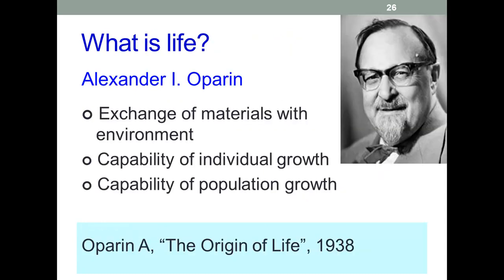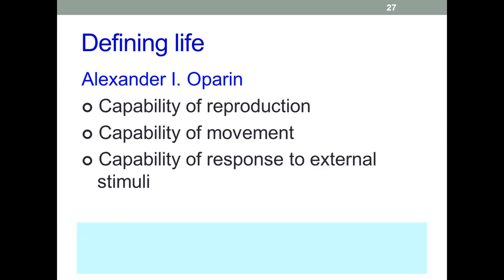So how do you define life? This chap here with his splendid glasses is Alexander Oparin. He was a Russian biologist who produced a famous book in 1938, 'The Origin of Life', in which he listed six characteristics of life — the first three on this page and the next three on the next page. You've almost certainly come across these. I covered them doing O-level biology, and I'm sure if you've done GCSE and A-level biology you've covered them as well.